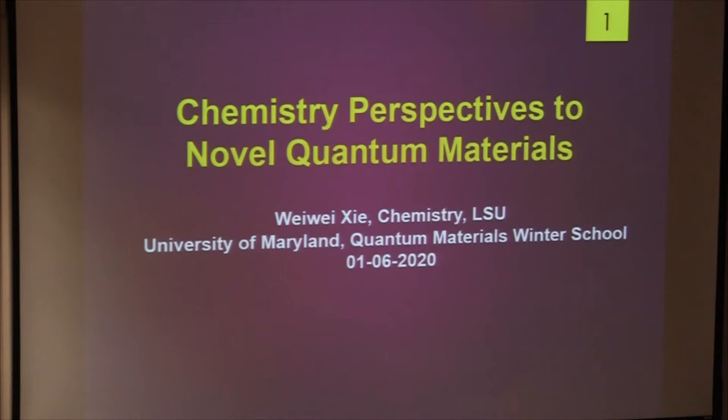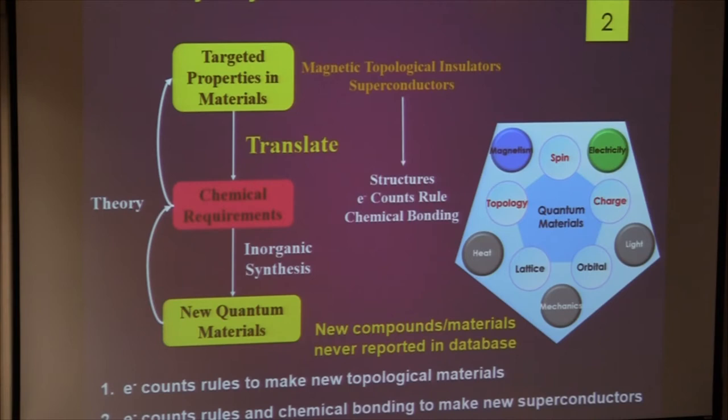We talk a lot about quantum materials. So what are quantum materials? We can think about quantum materials as materials which have very interesting electronic properties related to their spin, charge, topology, lattice, or orbitals. These materials may also have very interesting magnetic, electrical, heat, or mechanical properties.